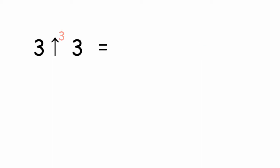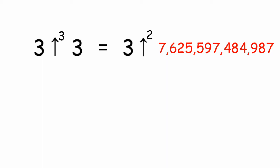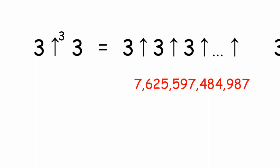What about 3 triple arrow 3? That's equal to 3 double arrow 3 double arrow 3. 3 double arrow 3, as we've known earlier, is equal to 7.6 trillion. So we have 3 double arrow 7.6 trillion — that means 3 arrow 3 arrow 3 arrow 3 arrow 3 arrow 3 arrow 3, repeated 7.6 trillion times.